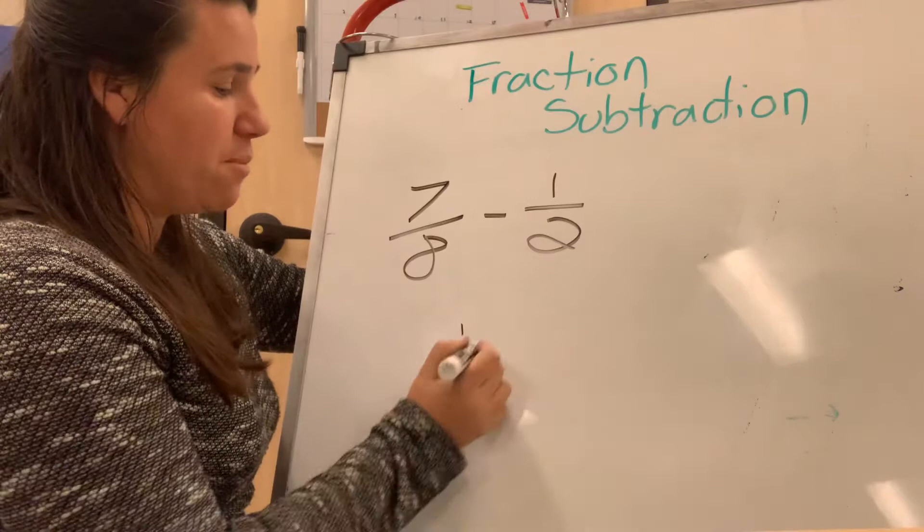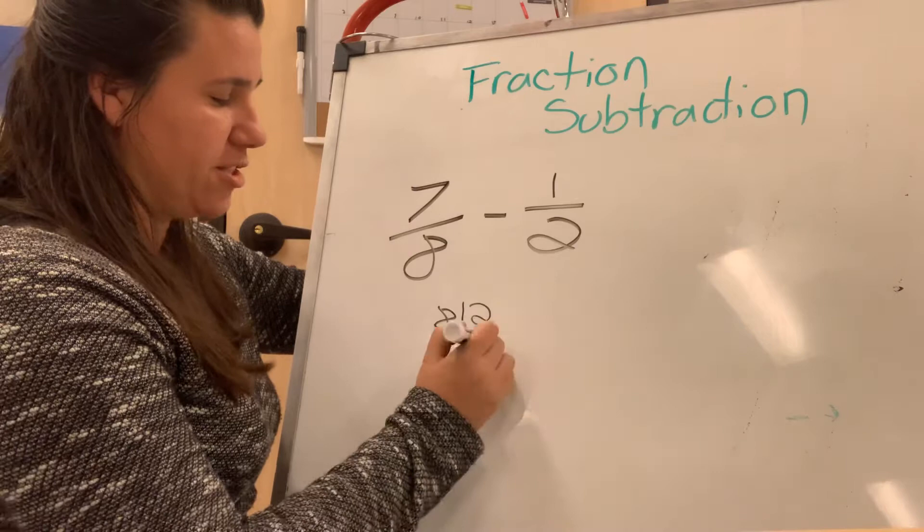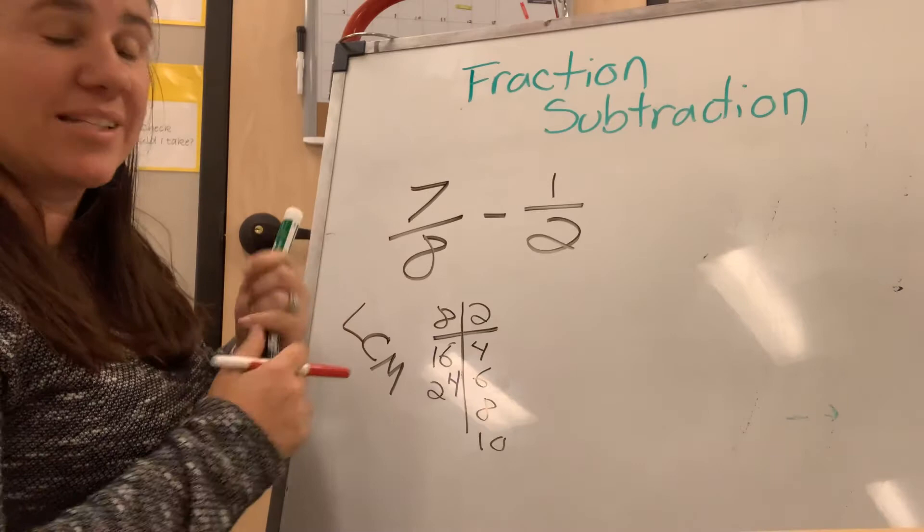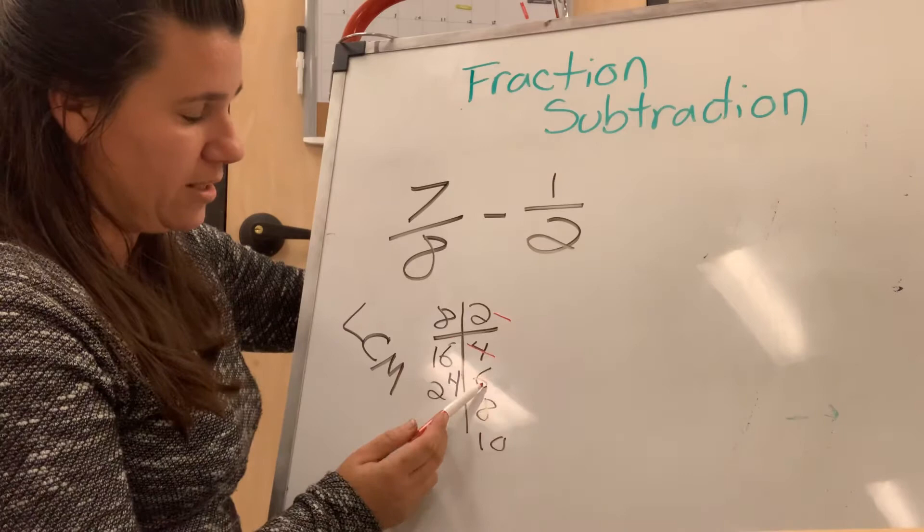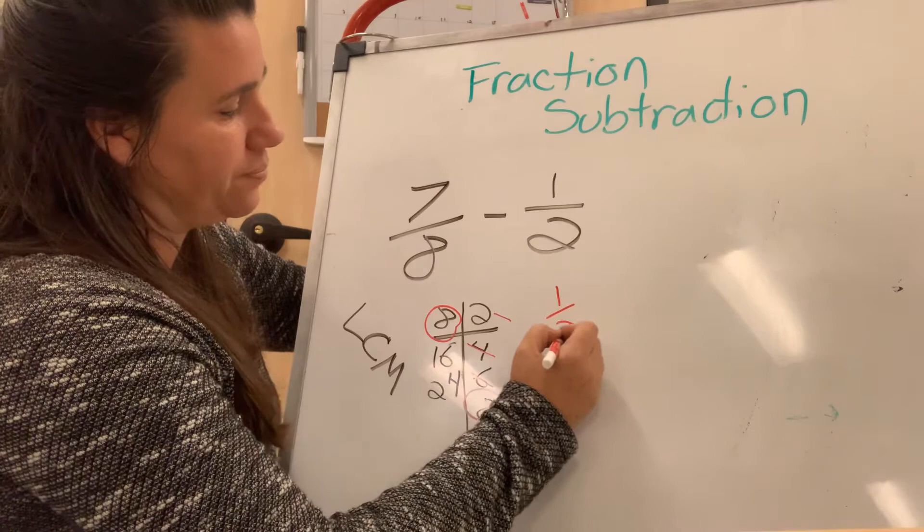So I'm going to list the multiples of eight and two. Eight, 16, 24, and then two, four, six, eight, 10. I'm looking for what's known as the lowest common multiple. And so that is the multiple that is the same between the two that is the smallest. So I'm going to start with two. Four won't work. Two won't work. Six won't work. Eight will work. So seven-eighths is already an eight. So I'm going to keep it that way. But I need to change one-half into eighths.